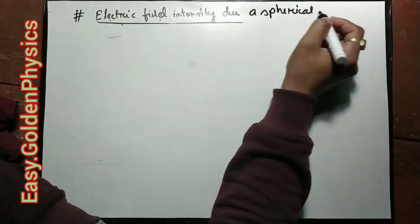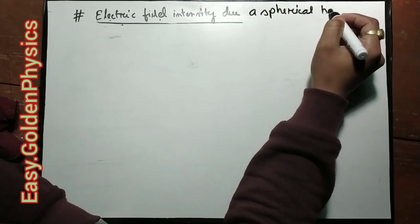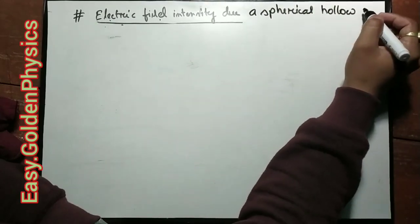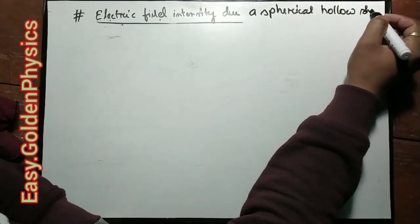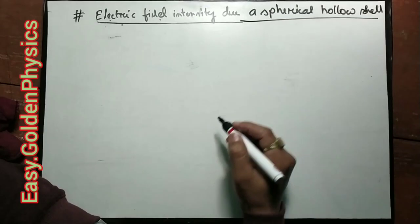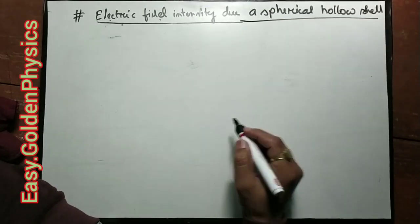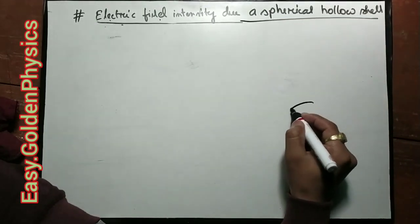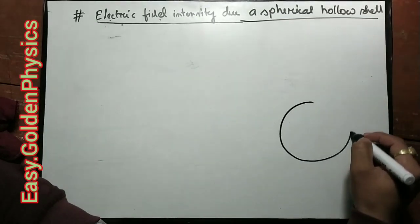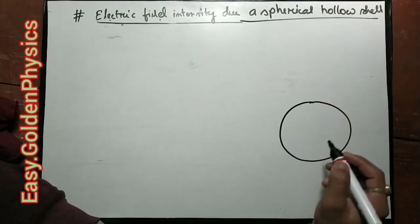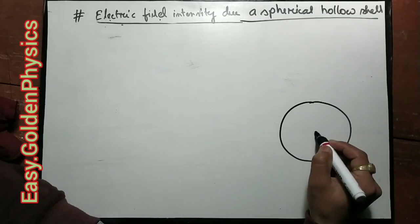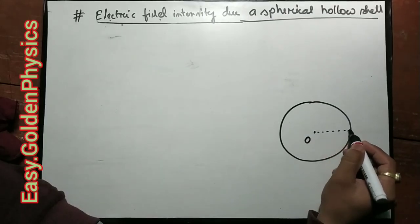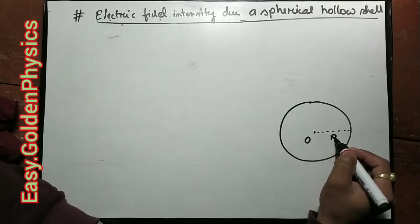Here is a spherical hollow shell. This is a sphere with center O and radius R.